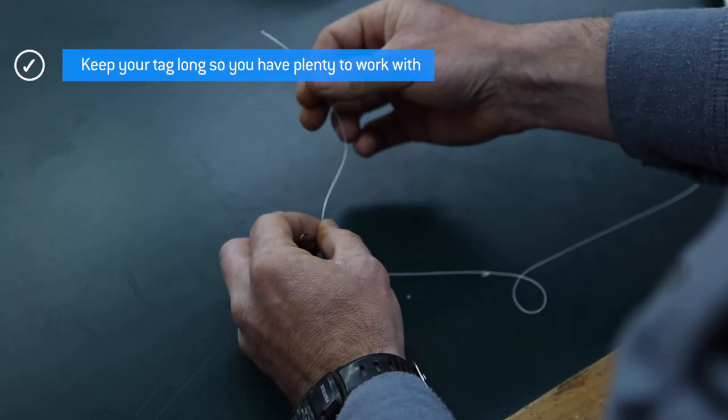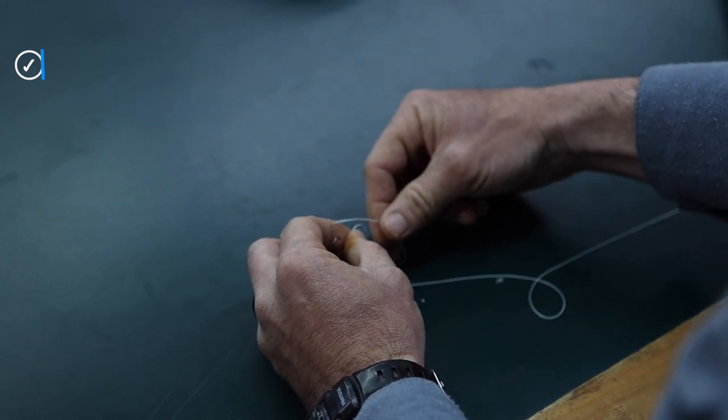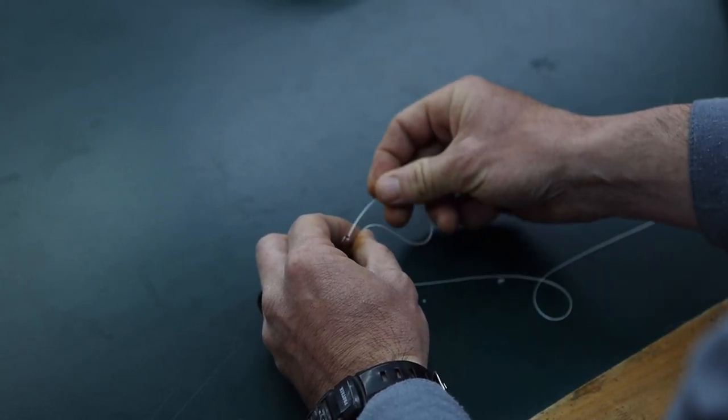What is really important is to make sure that you have plenty of tag material to work with. Pull out plenty of tag. The more tag you have, the easier this knot's going to be able to tie, and it doesn't ultimately have any effect on how much tippet material you end up using.